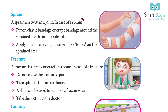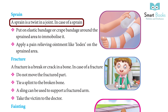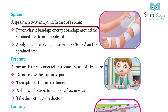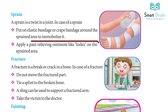Sprain: A sprain is a twist in a joint. In case of a sprain, put an elastic bandage or crepe bandage around the sprained area to immobilize it. Apply a pain-relieving ointment like Iodex on the sprained area.